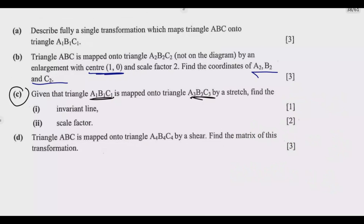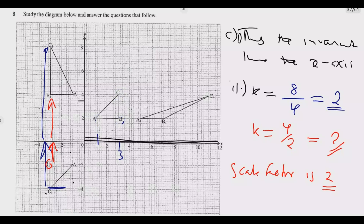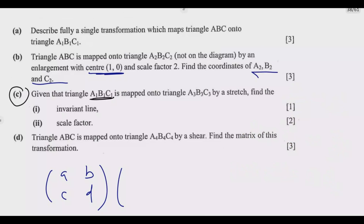Then look at the last question: triangle ABC is mapped onto triangle A4B4C4 by a shear. Find the matrix of this transformation. We let the matrix be [[A, B],[C, D]]. Multiplying this matrix by the original coordinates should give the image coordinates. We pick two corresponding points: A at (1, 2) and C at (3, 4). These should map to A4 and C4 respectively.